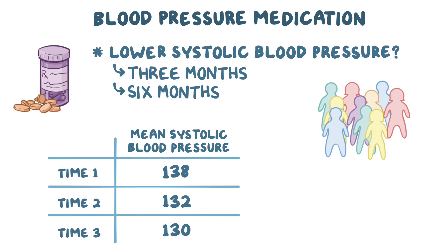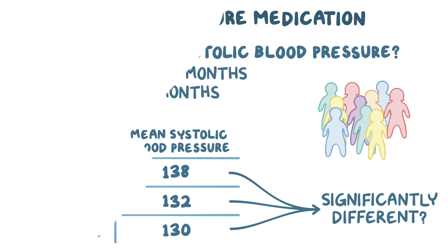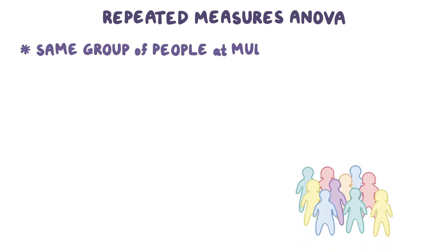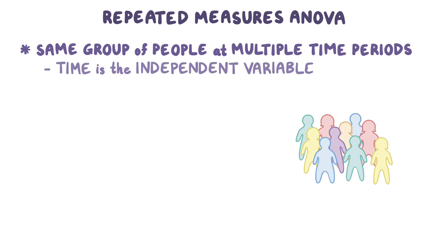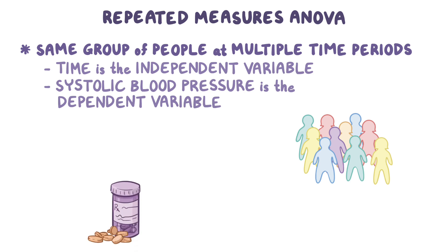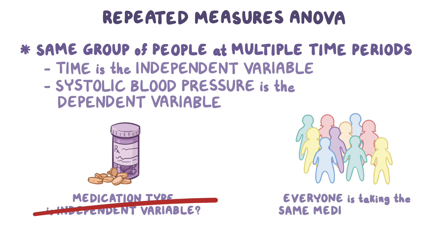The next step is to figure out if 138, 132, and 130 are significantly different from one another, and you do that by performing an ANOVA test. Specifically, we'd want to use a repeated measures ANOVA test, because we're looking at the same group of people at multiple time periods. In a repeated ANOVA test, time is the independent variable, and systolic blood pressure is the dependent variable. It might be tempting to think that medication type is the independent variable, but this isn't the case, since everyone in the study is taking the same medication type.